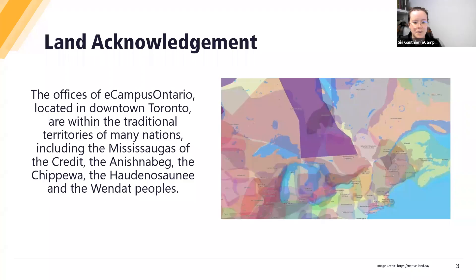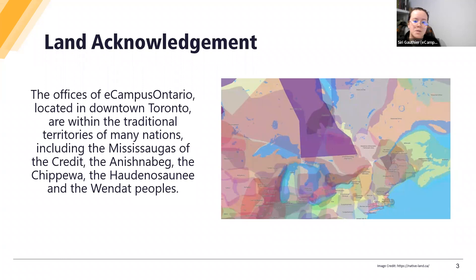We'd like to ground this session in a land acknowledgement. The offices of eCampus Ontario, located in downtown Toronto, are within the traditional territories of many nations, including the Mississaugas of the Credit, the Anishnabeg, the Chippewa, the Haudenosaunee, and the Wendat peoples. We acknowledge and thank the diverse Indigenous people whose footsteps have and will continue to mark this territory, and we ask that you consider the caretakers of the lands and waters on which you are situated. I'm coming to you as a settler on land covered by Treaty 13 and the William Treaties. Feel free to share your own land acknowledgements in the chat.